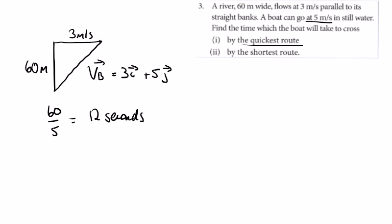For the shortest route, we're going to look at another triangle. We're going to go in this direction to get across by the shortest route, so we get dragged back down to this point here. So this is 3, the boat can travel at 5 in this direction here. Using Pythagoras, this is going to be 4.